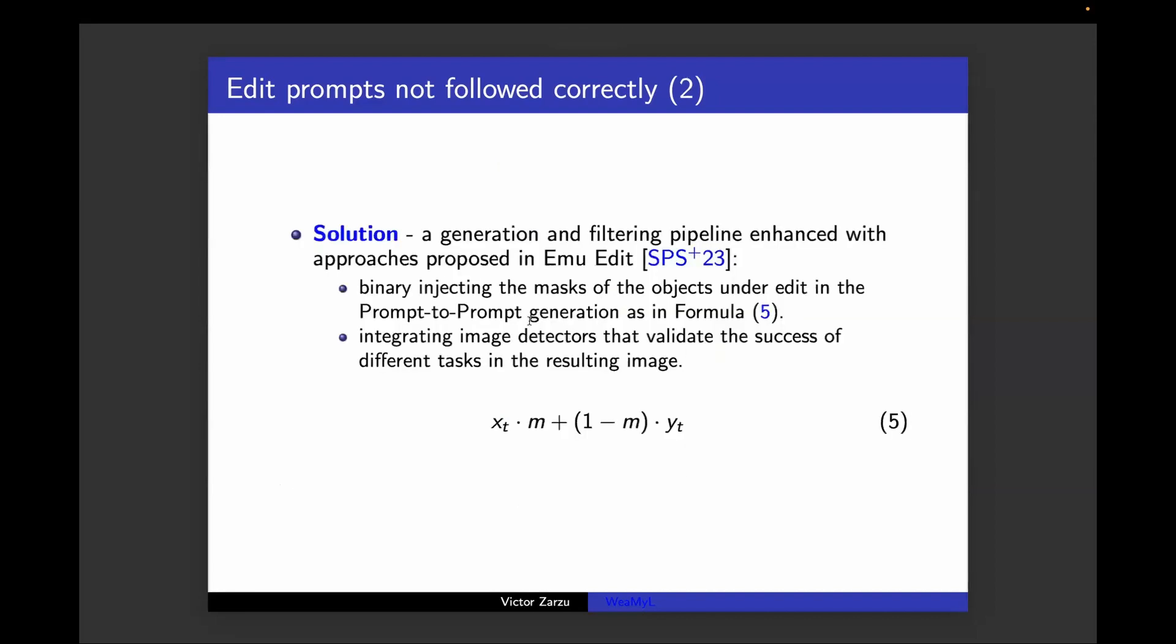A solution to this would be to make a more comprehensive filtering pipeline that was presented in a recent paper from Meta, where they enhance the pipeline using image detectors that validate the success of adding or removing the object in the resulting image, or just to inject the segmentation mask of the object under edit in the Prompt-to-Prompt approach.